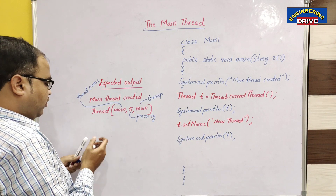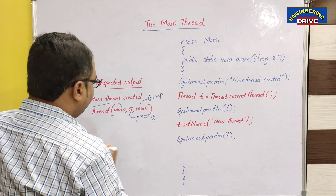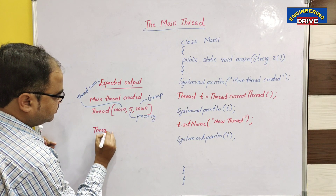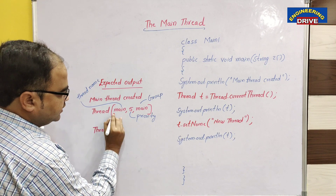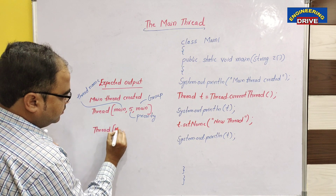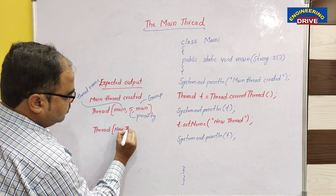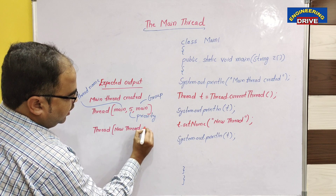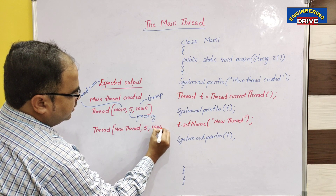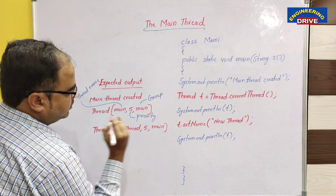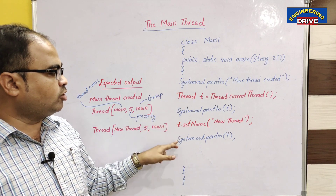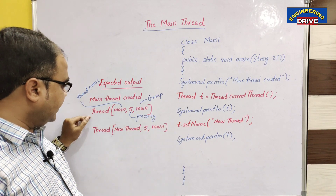After calling setName(), when you display the value of t again, the output will be: Thread[new thread, 5, main]. So instead of 'main' as the thread name, you get 'new thread', while the priority remains 5 and the group name stays 'main'. Since we used System.out.println three times, we got three lines of output.